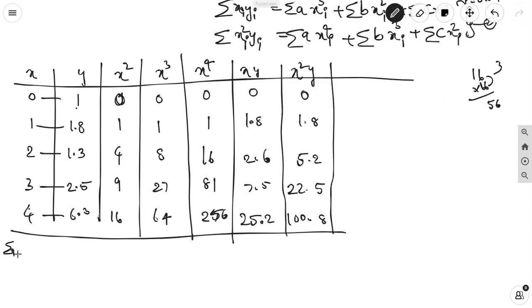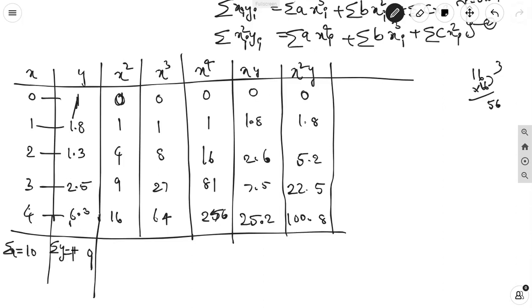Σx = 0+1+2+3+4 = 10. Σy = 1+1.8+1.3+2.5+6.3 = 12.9. Σx² = 0+1+4+9+16 = 30.